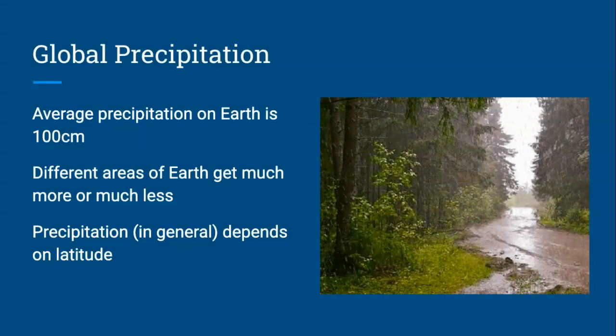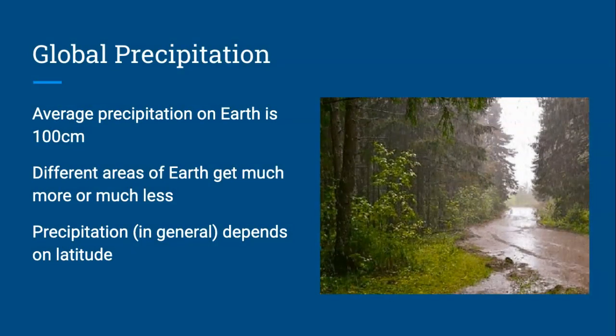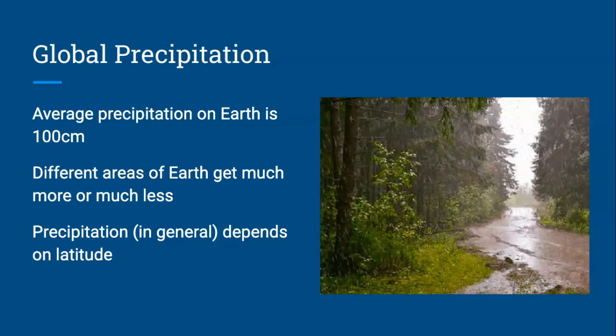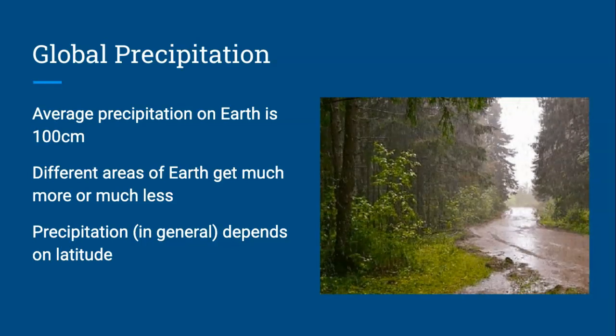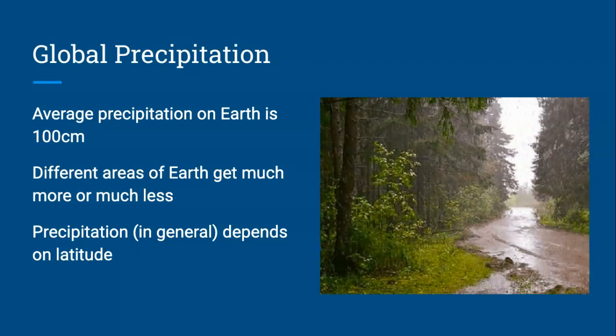Next, it's interesting to know that on average, any spot on Earth gets about 100 centimeters of rain. That being said, different parts of Earth get very different amounts of rain. Some get much more rain and some get much less. And it turns out, the precipitation in general depends on latitude.